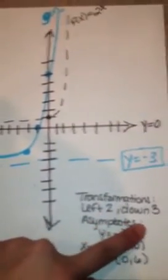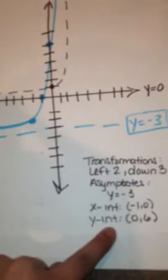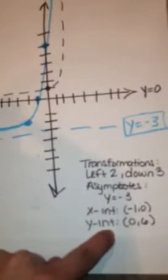So to plot it, you apply the transformation: left 2, down 3. The asymptote is y = -3, x-intercept is (-1, 0), and y-intercept is (0, 6).